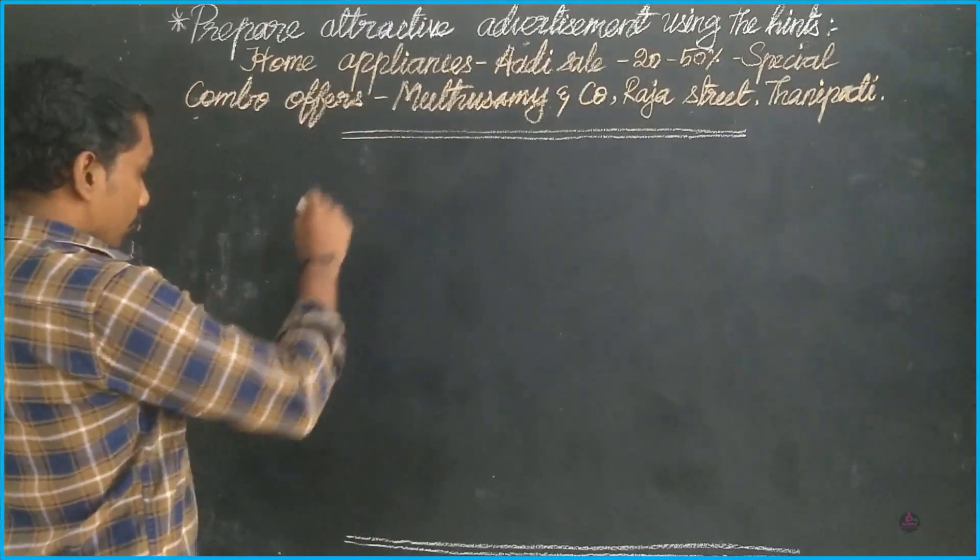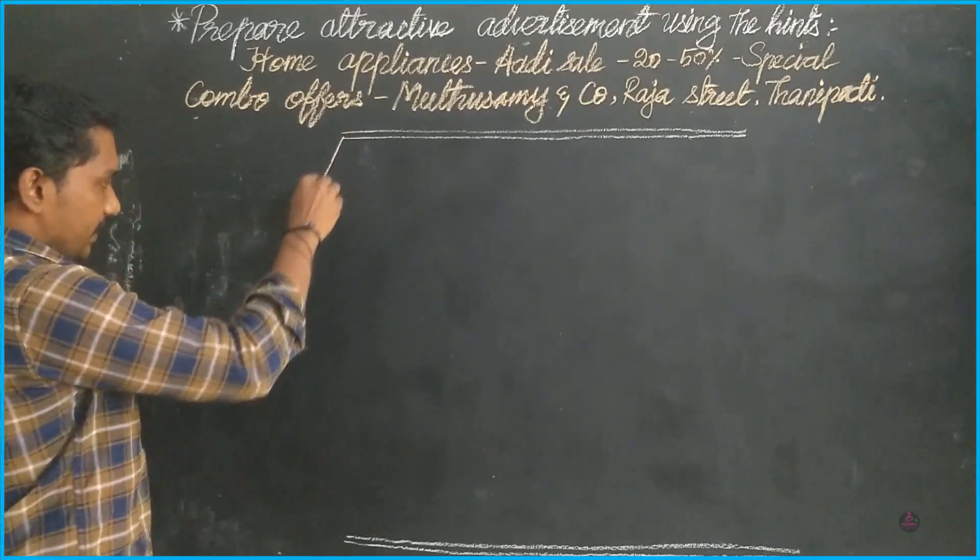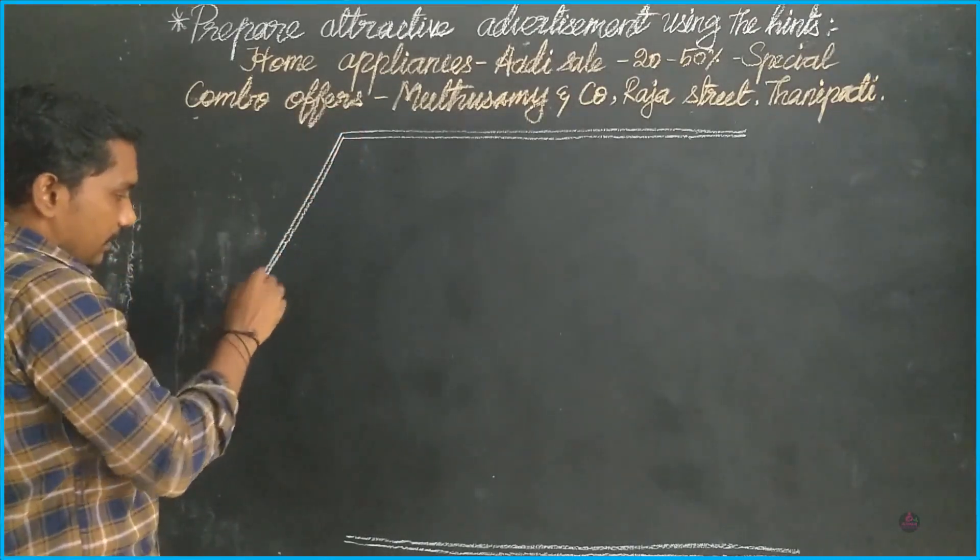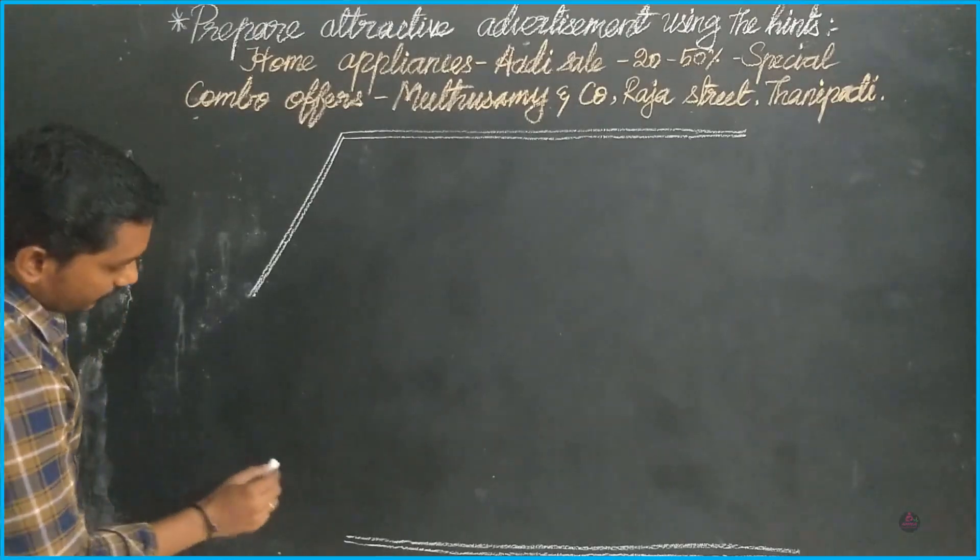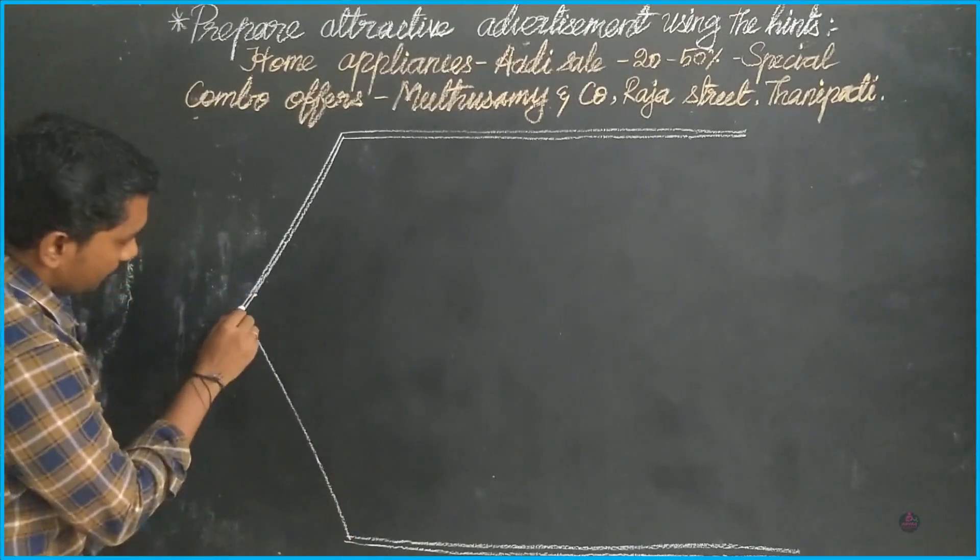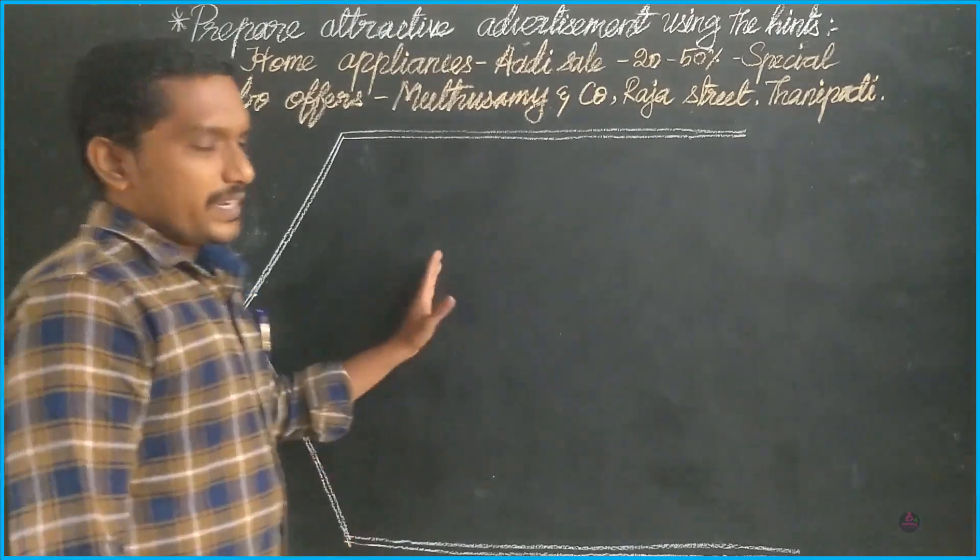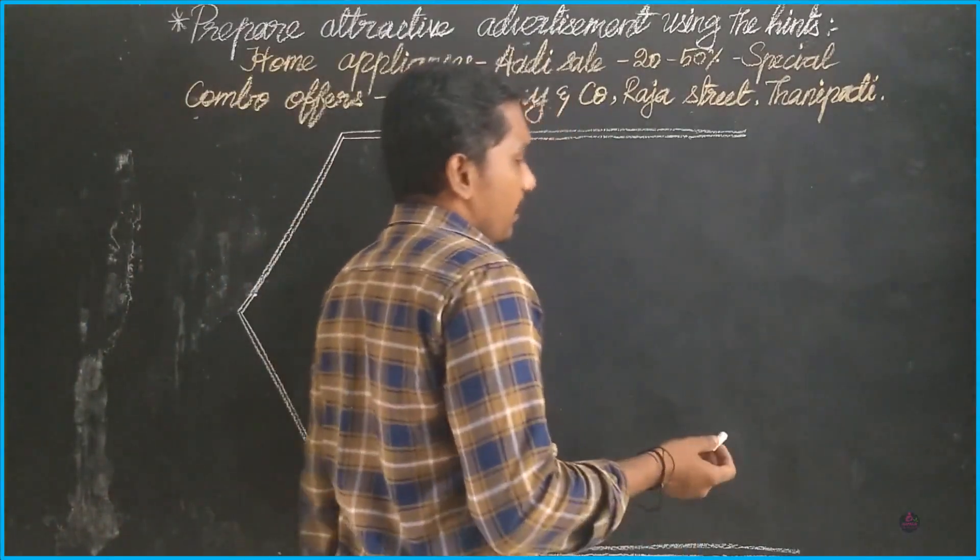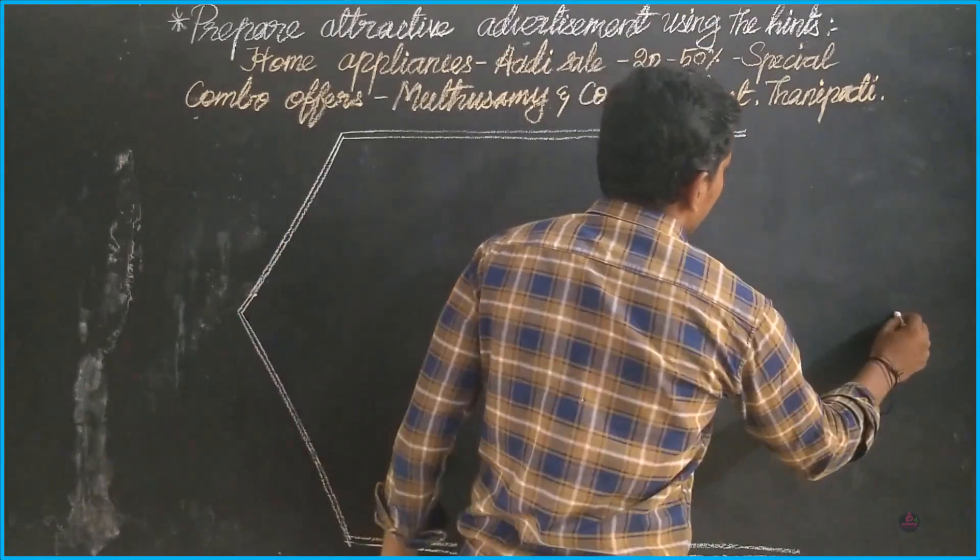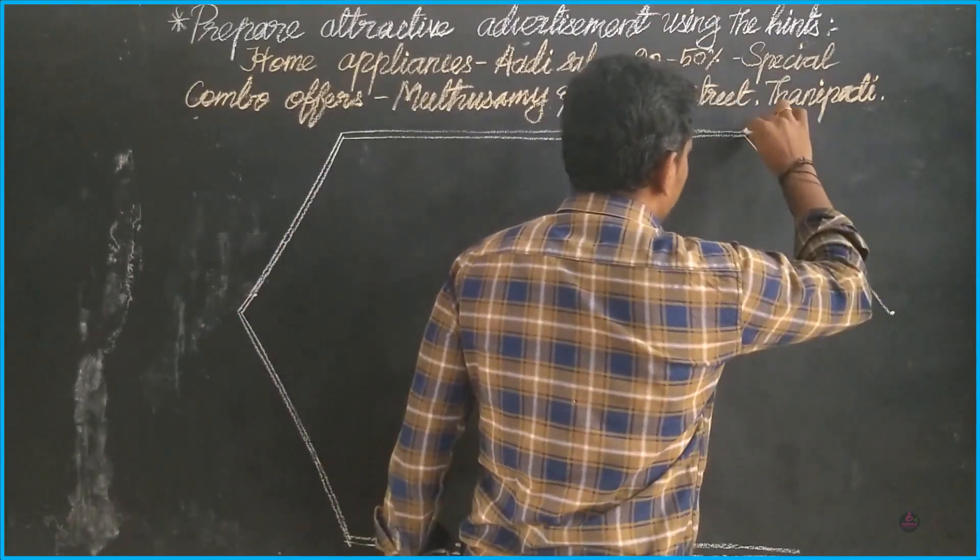Now fix the center point of it like this and complete it. It's a slanting line. Here also you have to make double line and complete it. Double line will give us extra attention. Here I'll show you how to fix another one center point and complete like this.